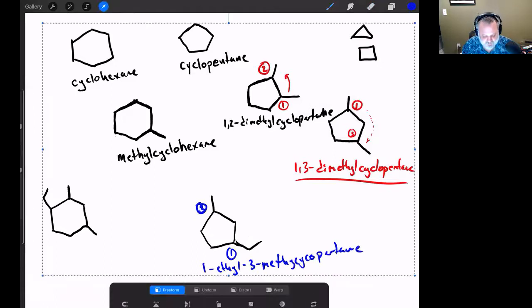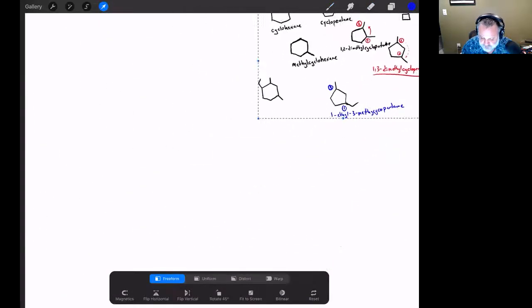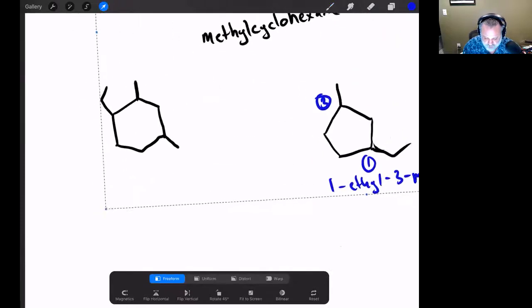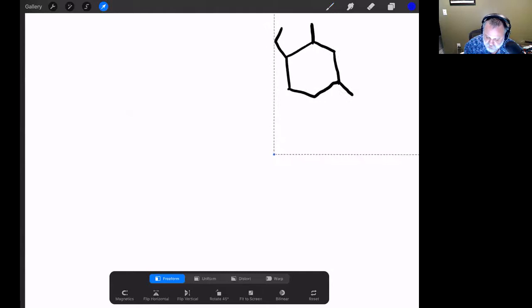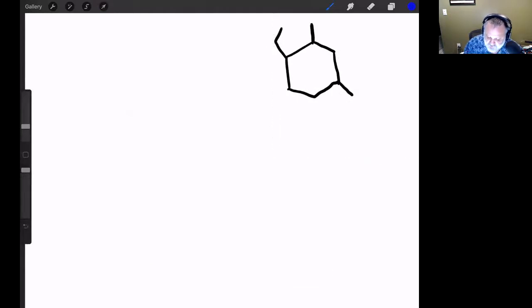All right, so let's take a look and let's do this example here. Let's take a look at this guy. How do I do this? Where do I start? Well, let's see if I have to make an alphabetic decision.